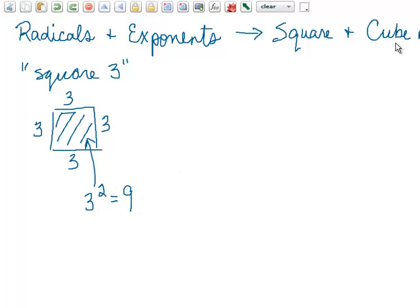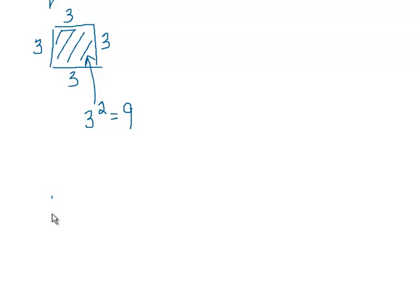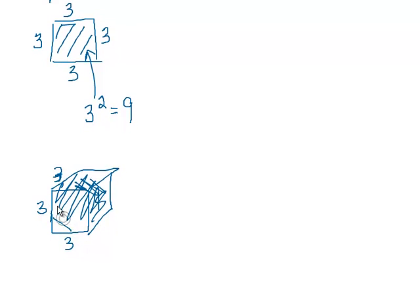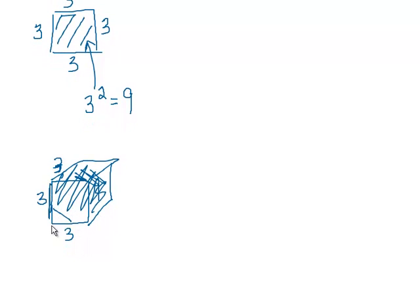What's it mean to cube something? Same idea, only instead of turning it into a square, what happens if I have a cube that is three on each side? And then we're talking about what's the volume of that cube? And again, you know that to find the volume of a rectangular prism like this will be length times width times height, or three times three times three, three cubed, which is 27.